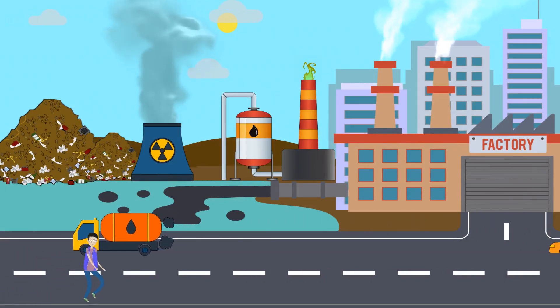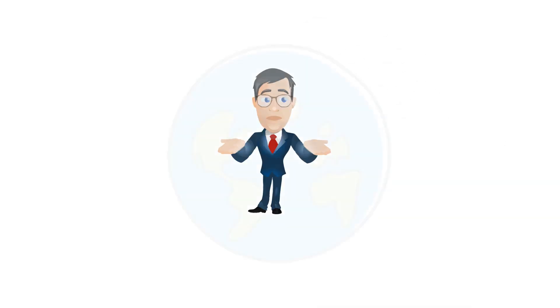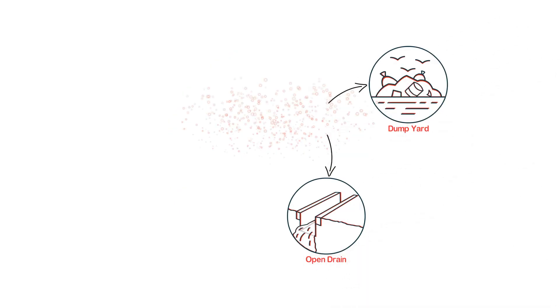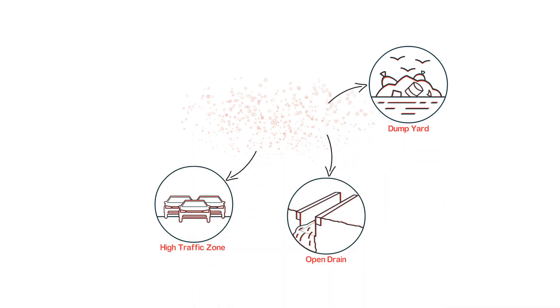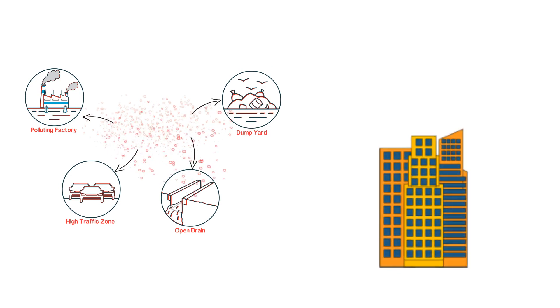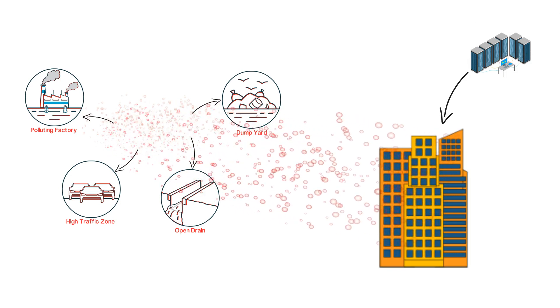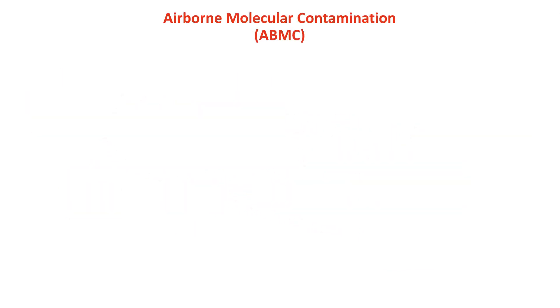Rising air pollution and airborne molecular contaminants, or AMC, threat have raised alarm bells for industrialists and operations managers all across the globe. Corrosive gases emanating from nearby dump yards, open drains, high traffic zones and polluting factories are leading to catastrophic effects in mission critical facilities due to the highly corrosive environment for sensitive electronic control systems.